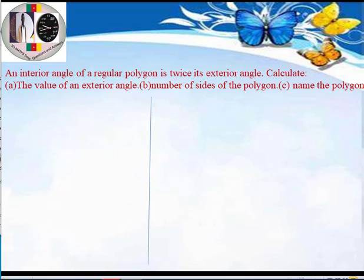A polygon is simply a regular figure. It's a two-dimensional figure, meaning it's not 3D — it's just figures drawn on your board or paper, like a square or a rectangle. It's a two-dimensional figure that is closed, meaning all the lines form a loop and must meet to give you a complete figure with no open edges. The angles within the figure are called interior angles, and the angles outside the figure are called exterior angles.